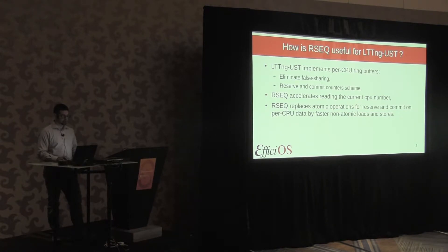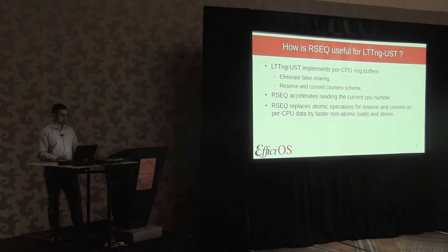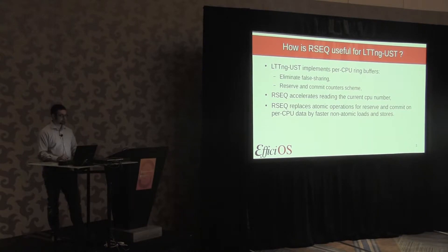What's the use of rseq for LTTNG-USD? LTTNG-USD implements per-CPU ring buffers — this is how we transfer a lot of data over shared memory to a consumer daemon, achieving user space tracing quickly without going to the kernel. Per-CPU ring buffers eliminate all sharing between cores, so we don't have cache line bouncing. It's done with a reserve and commit counter scheme: the reserve is done with an atomic compare-and-exchange, and the commit counter with an atomic add.